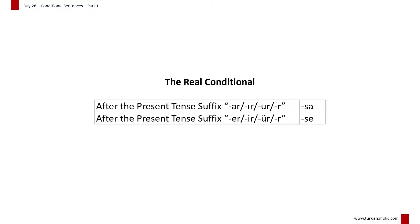First, let's look at some verbs made into the real conditional: Ben yaparsam, sen gelirsen, o bulursa, biz yersek, siz üzülürseniz, onlar gezerlerse.